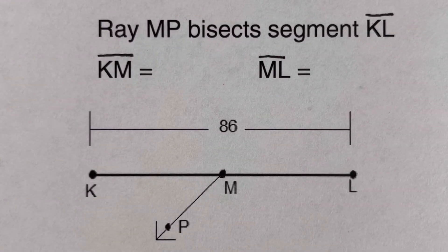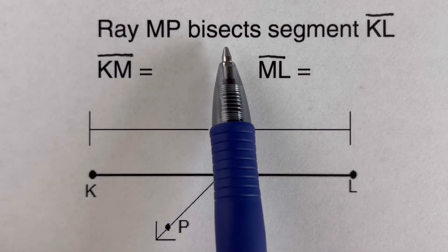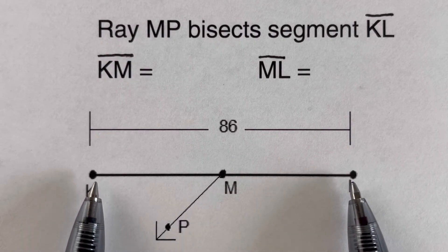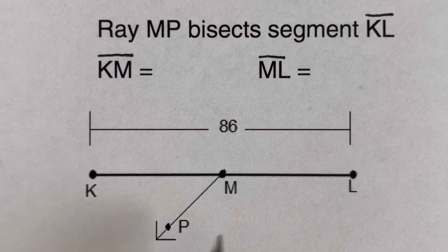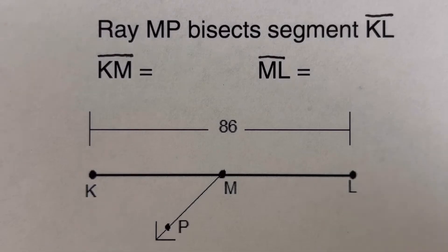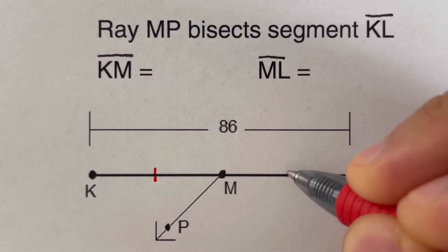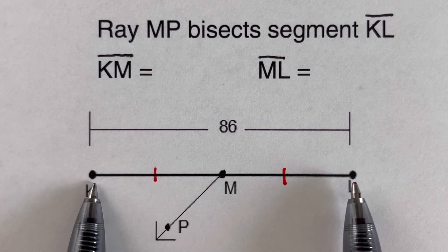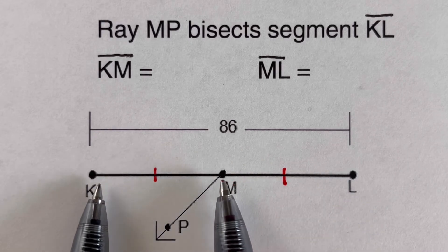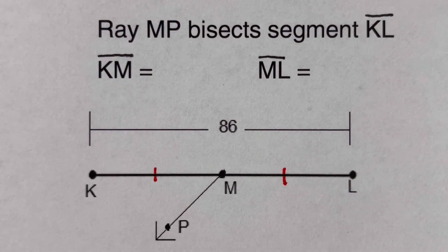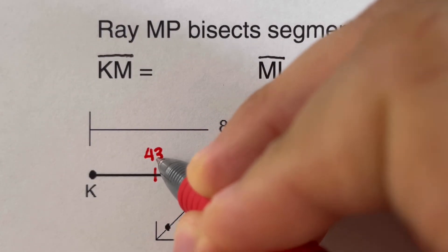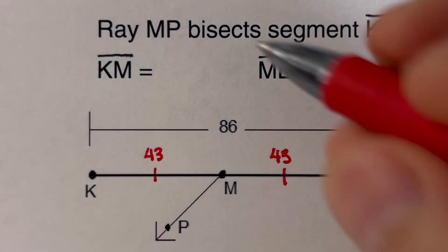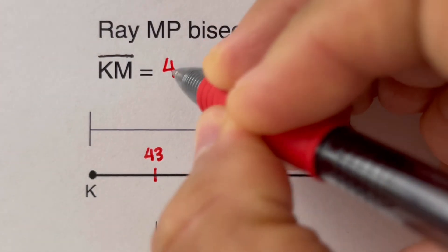In this example, ray MP bisects segment KL. Since bisect means to cut or divide into two equal pieces, KM equals ML. The whole segment is 86, so we divide 86 by 2 to get 43. This means KM is 43 and ML is 43, and 43 plus 43 equals 86.